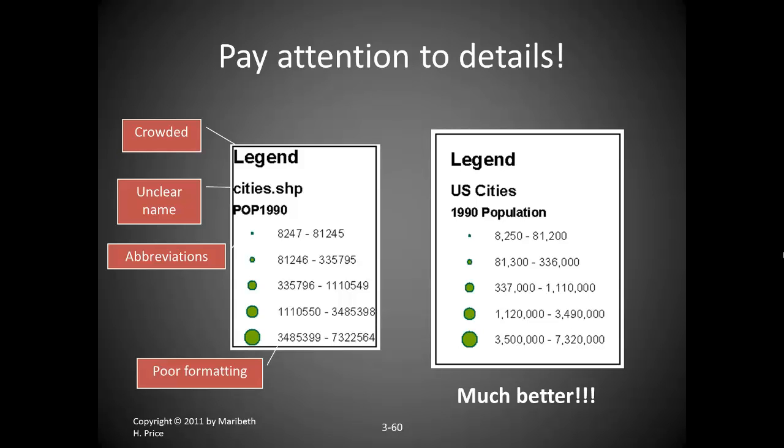Pay close attention to details. On a crowded legend, unclear names — like including '.shp' or 'pop_1990' — are not understandable to the casual reader. Certain abbreviations are acceptable but avoid obscure ones. Work on your formatting so that the numbers and labels on the legend are much more easily understood.